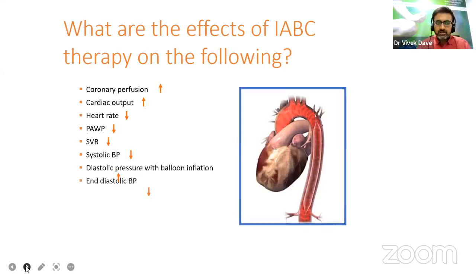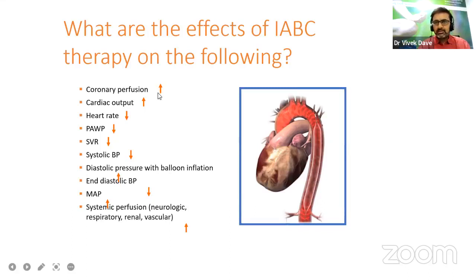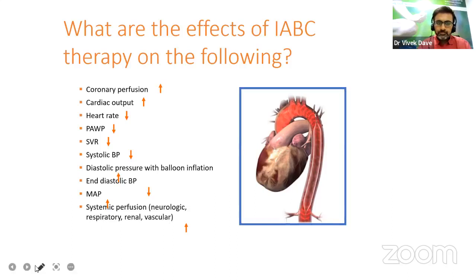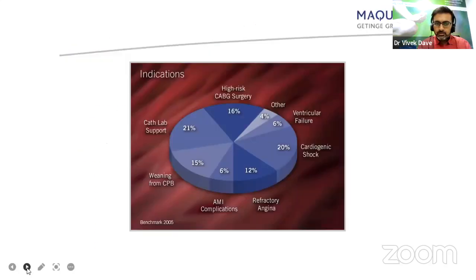Just remember this figure — the effects of IABP therapy: it increases coronary perfusion, increases cardiac output, decreases heart rate, and eventually decreases afterload.